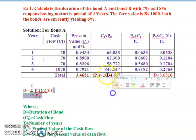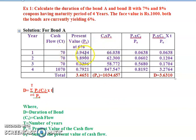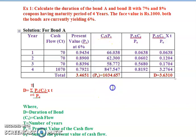Now we multiply cash flow CT by the present value factor. For year one: 70 times 0.9434 equals 66.038. For year two: 70 times 0.8900 equals 62.300. For year three: 70 times 0.8396 equals 58.772. For year four: 1070 times 0.7921 equals 847.547. Adding all these gives P-naught equal to 1034.657.